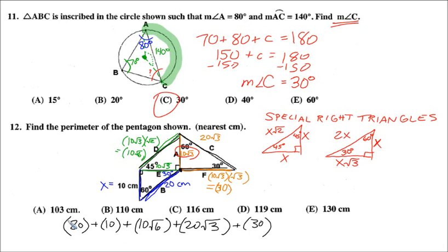For this statement, I'm just going to grab the graphing calculator. In my calculator, I'm getting, because we're dealing with square roots, it is an approximate value of 119.1359. It says the nearest centimeter, so the answer is D.